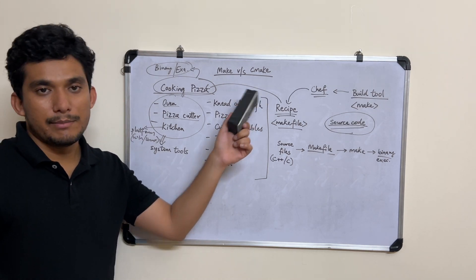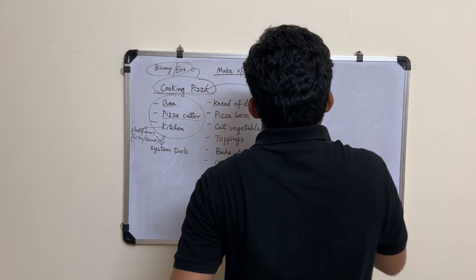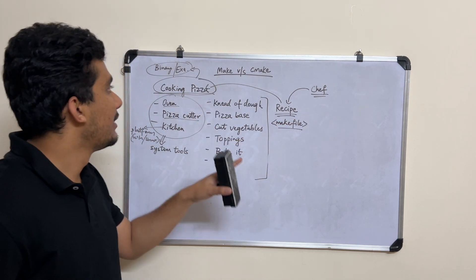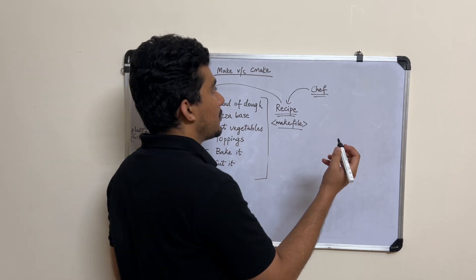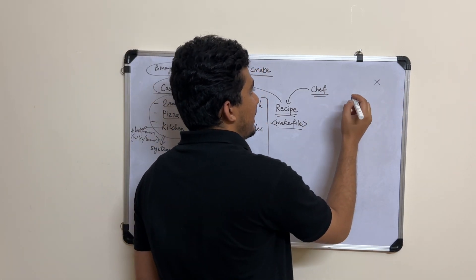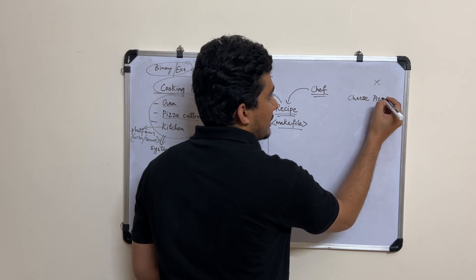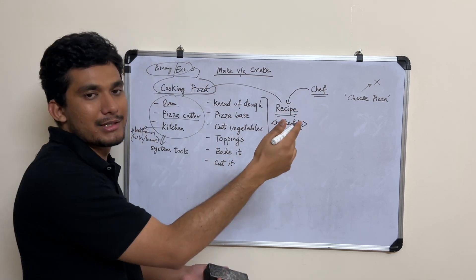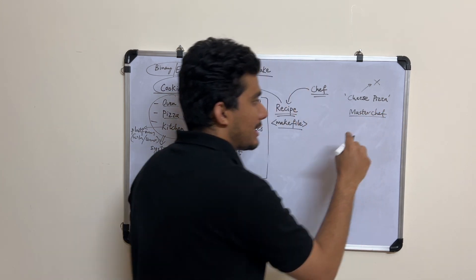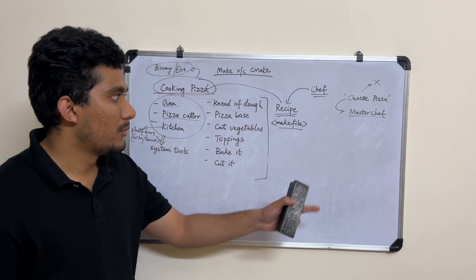Now let's understand what CMake is using the same analogy. Now that we know Make is basically the chef, let's assume there is someone you can give an instruction in very basic language — just say 'make me a cheese pizza.' You give this basic instruction to someone, let's call this someone a master chef. This person is aware of every recipe. You just give an instruction saying 'make me a cheese pizza,' and the master chef will be able to give you a recipe for whatever you requested.